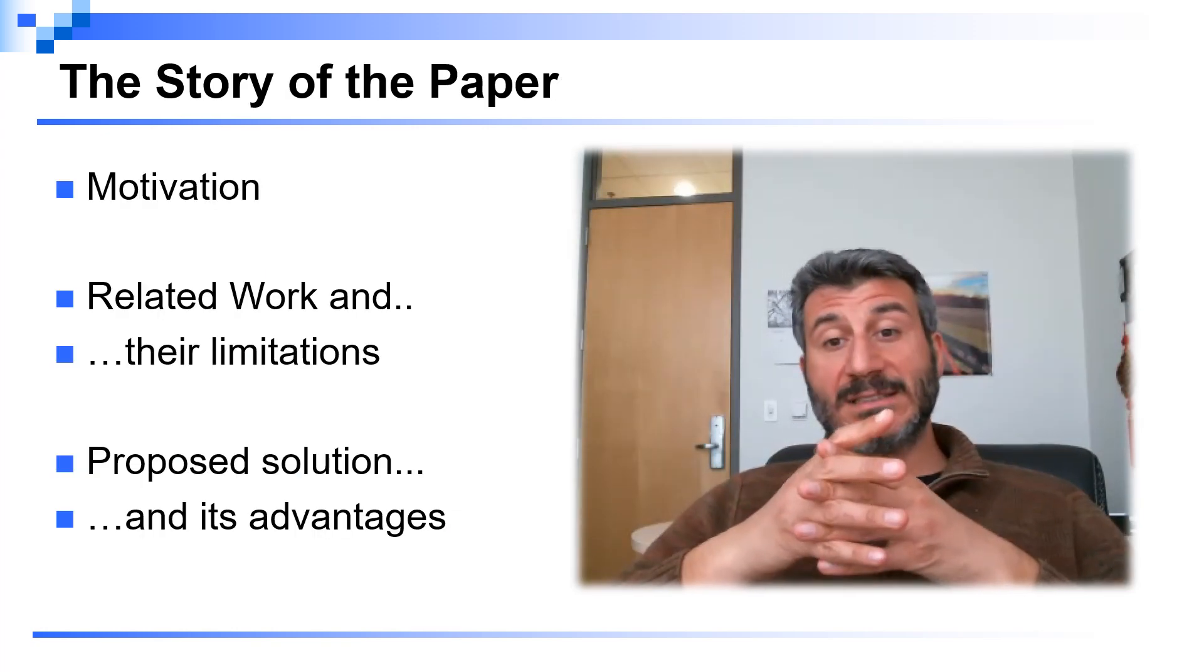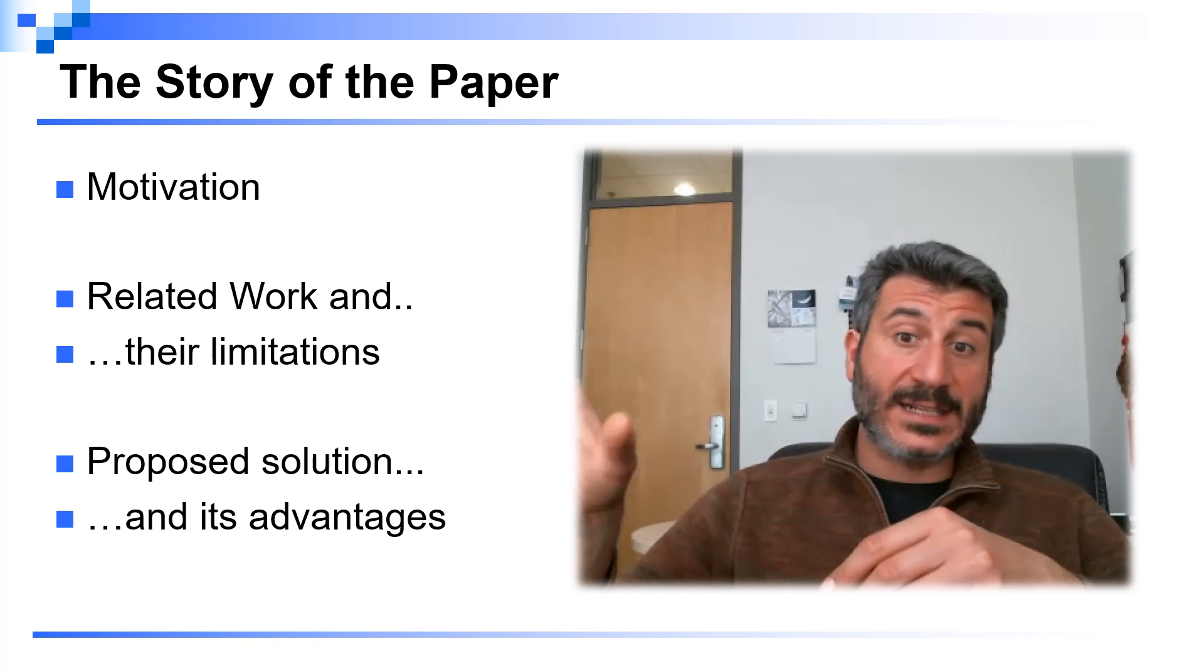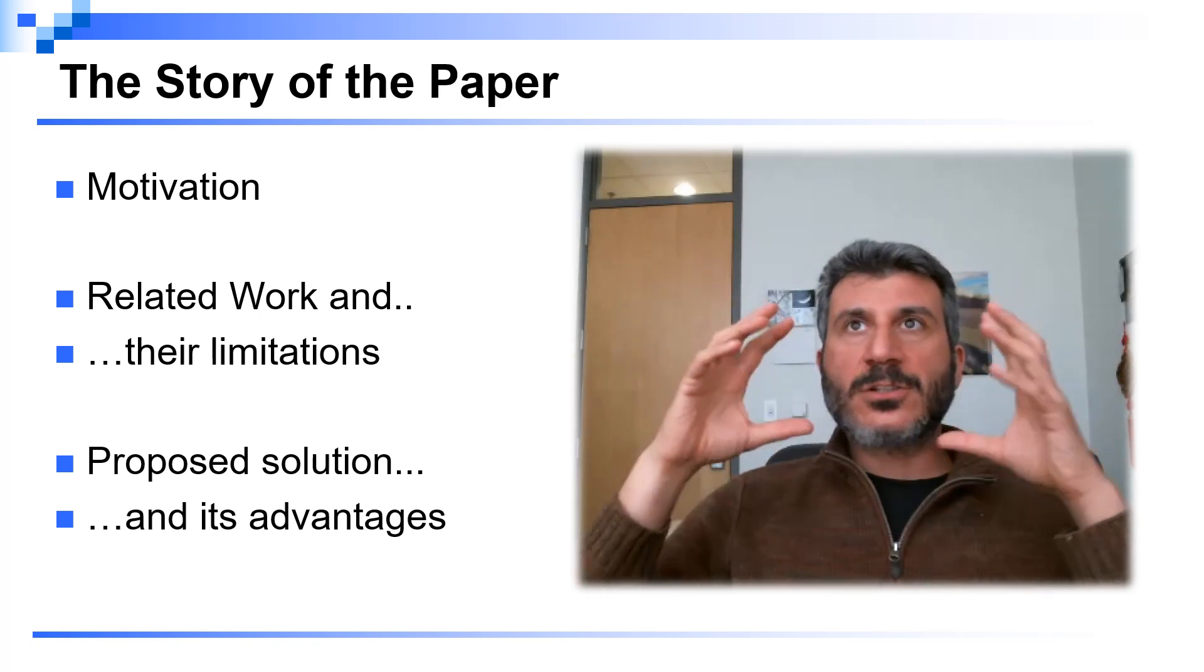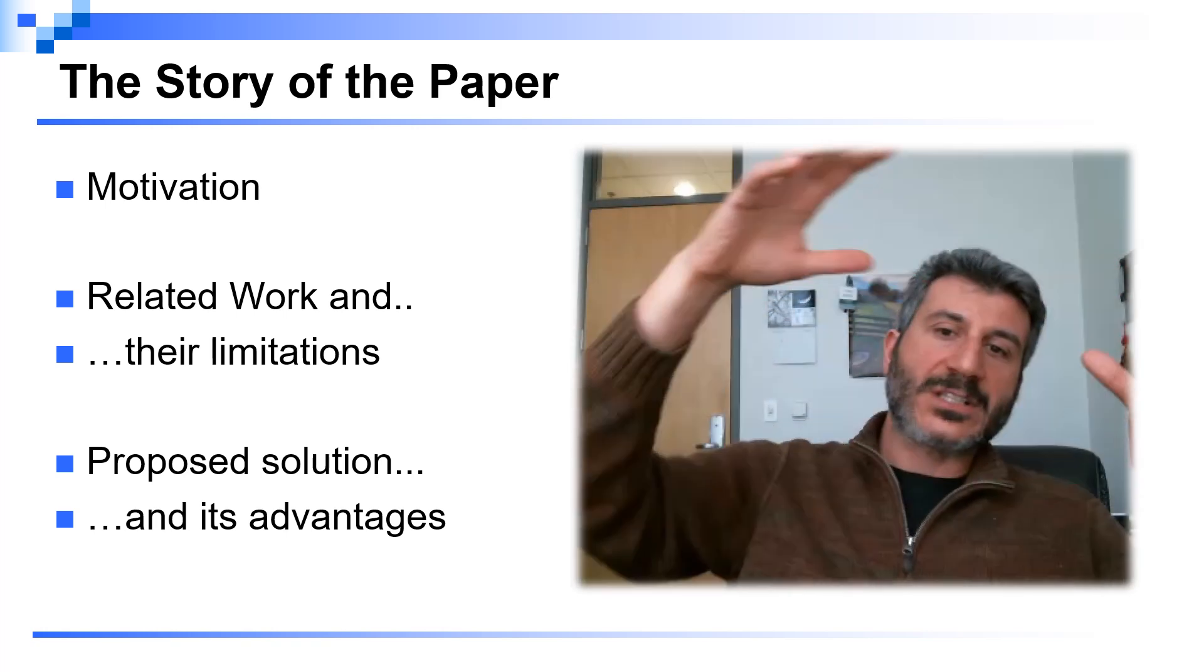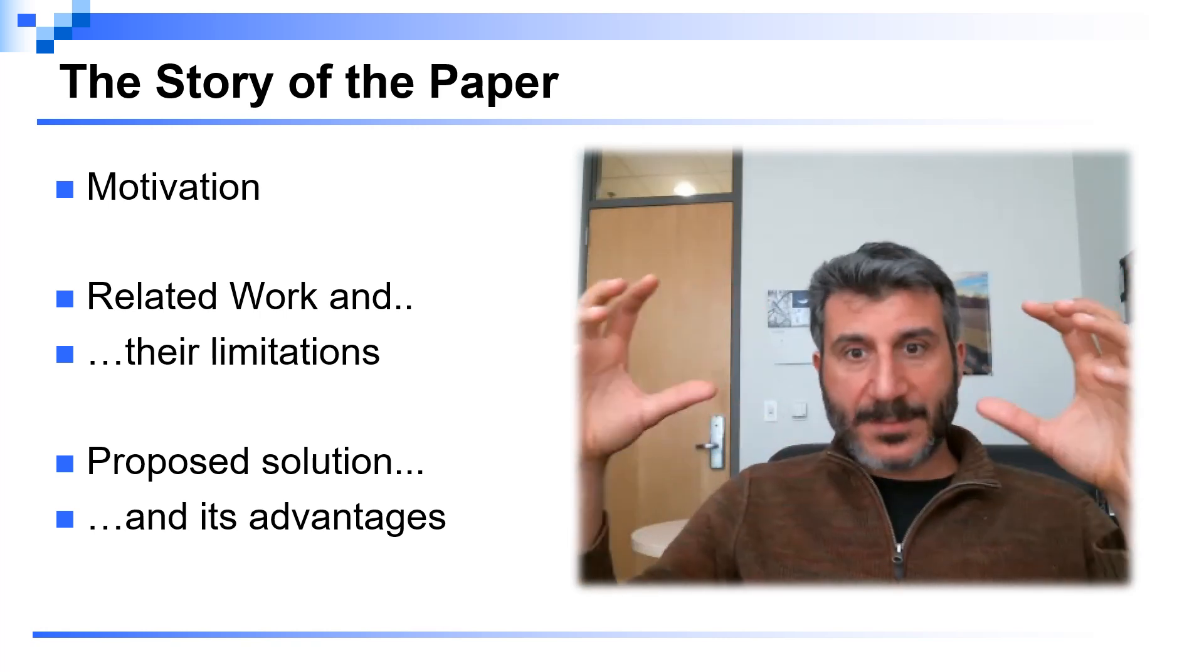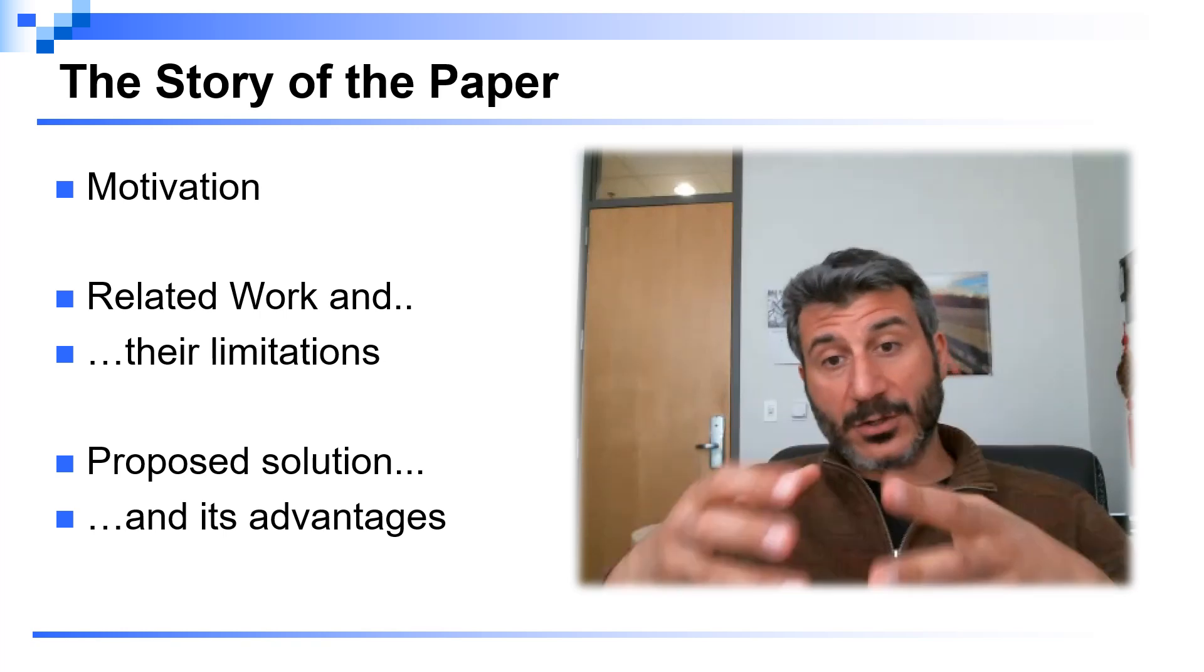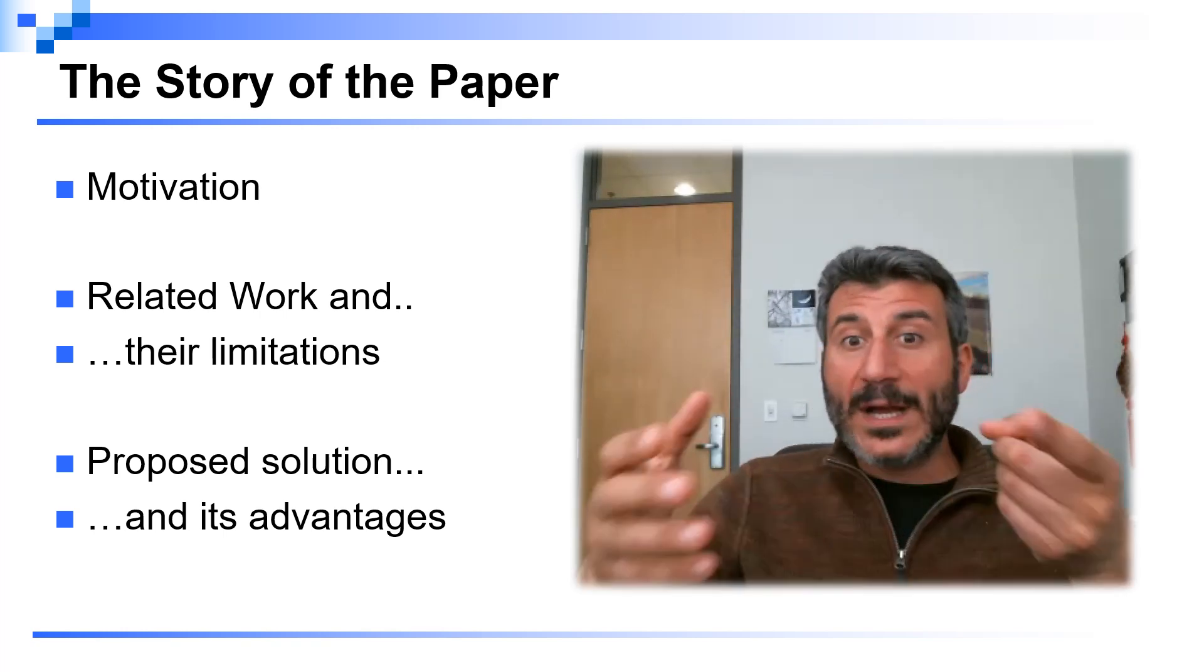As you think about the structure and the organization of the papers that you want to put inside the related work section, you also should think about what is the story of this paper. This is a long overarching story that goes from the abstract all the way to the conclusions and should be consistent throughout the paper. So the related work section should contribute to this story, and generally the story of the paper includes the motivation of the paper, so basically why the paper is important, why it is relevant, why it is a current problem.